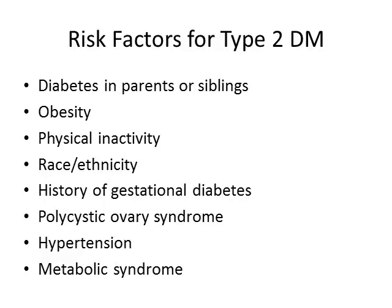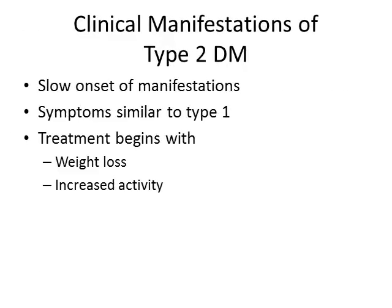Clinical manifestations for Type 2 are very similar to Type 1 — pay attention to those three P's: polydipsia, polyphagia, and polyuria, as well as fatigue and malaise. The onset is a little bit slower with Type 2. One of the very initial treatments is weight loss and increased activity. We don't want to talk to them about an ideal weight — let's start with losing some weight, maybe 10 pounds, because it can be very daunting. Increasing activity is also a great way to manage blood sugars.